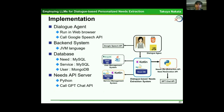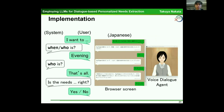The dialogue agent runs in a web browser and calls the Google Speech API. The backend systems are implemented in JVM languages, Java and Kotlin. There are three databases: the needs database uses MySQL, the service database uses MySQL, and the user database uses MongoDB. The needs API server is implemented with Python and calls the GPT chat API. This is the screen of the dialogue agent and dialogue flow.